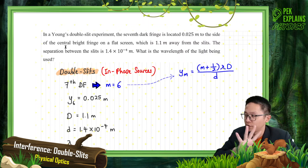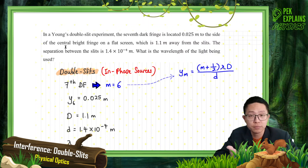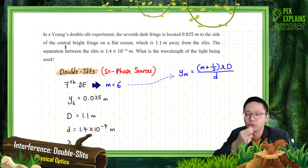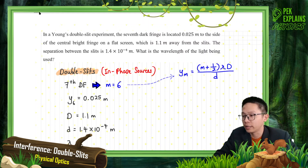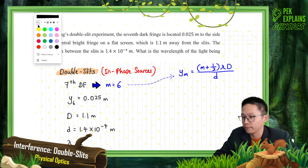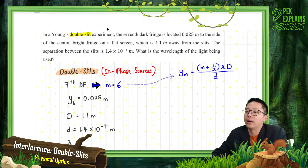In this chapter we have four things we have learned: double slit, thin films, single slit, and diffraction grating. So first of all, we need to identify which one. Here we can see it is about double slit - so it's about two slits.